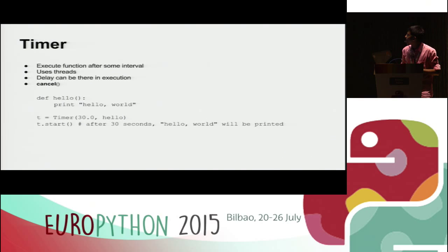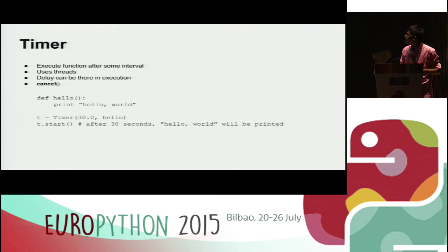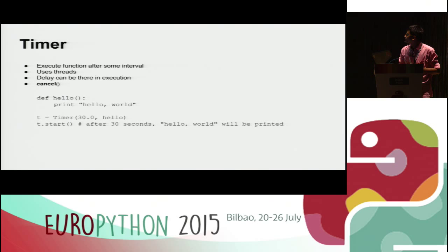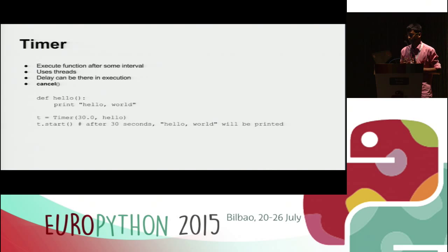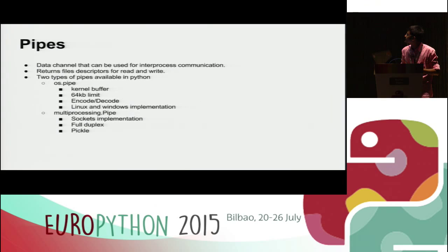A Timer is used to execute a function after some interval. If you want to execute a function after 30 seconds, you can use it. There can be a delay — for example it may execute after 31 or 32 seconds — because it uses a thread internally. Due to the Global Interpreter Lock or other reasons, a delay can occur.